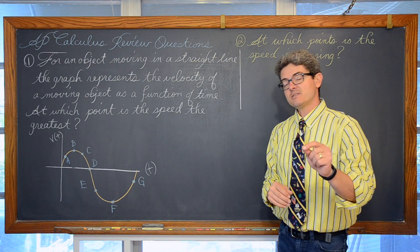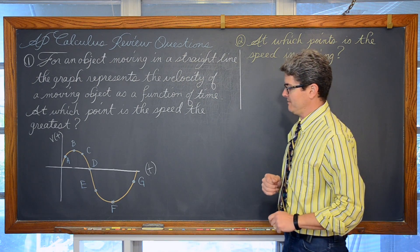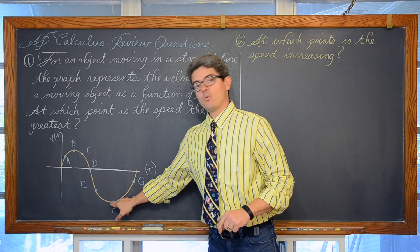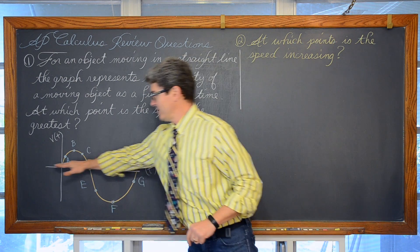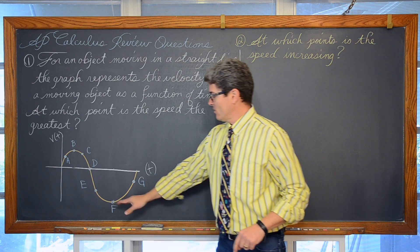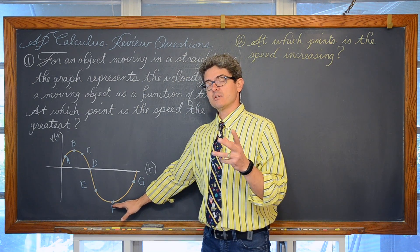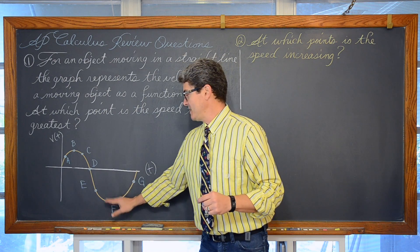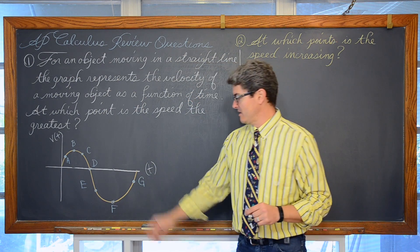But since speed is the absolute value of velocity, this point f is the farthest point away from this t axis. So while that might be the lowest value for velocity being negative, since speed is the absolute value it is going to be the answer of f. This is when the speed is the greatest.